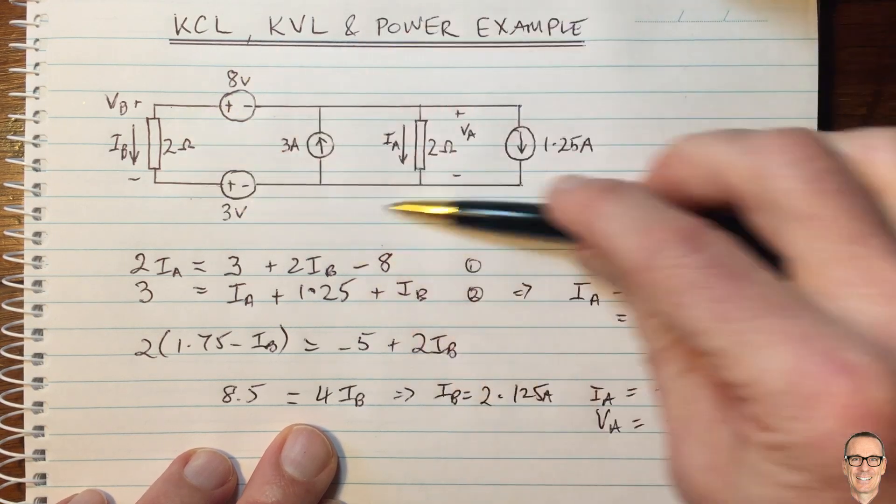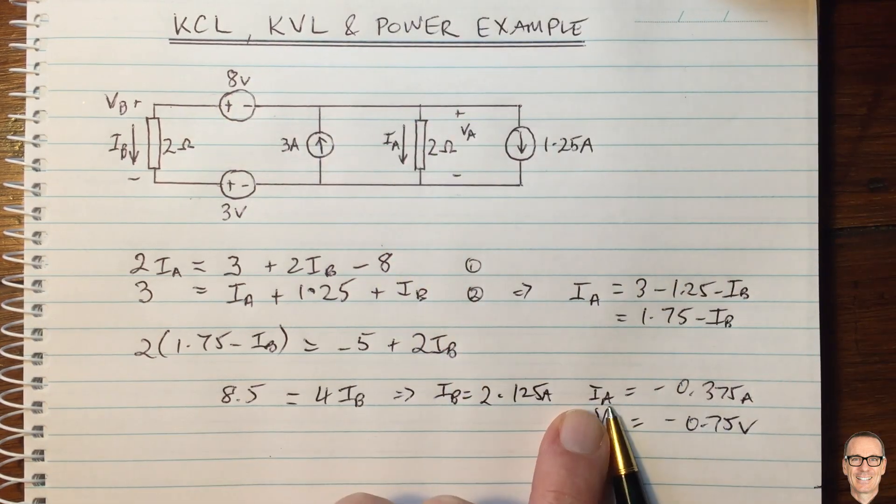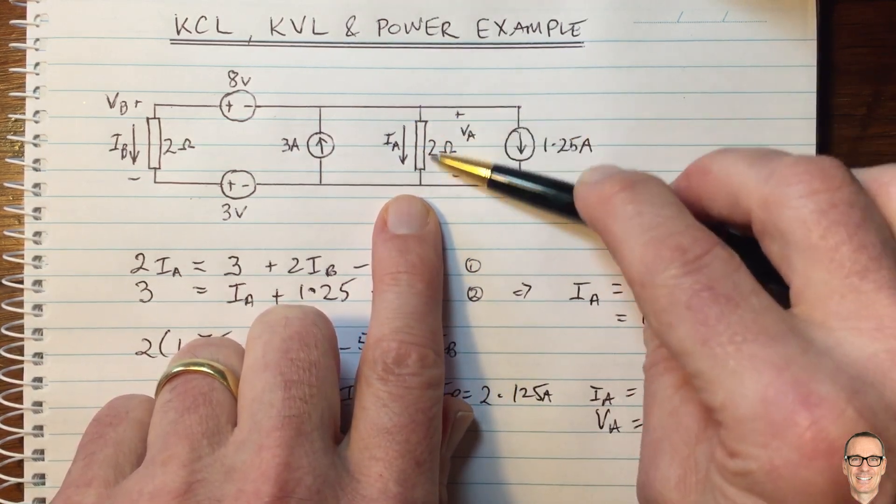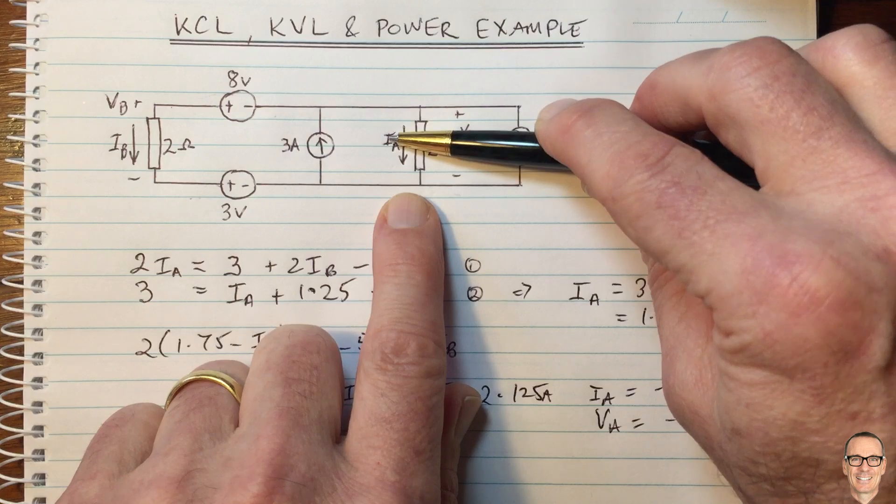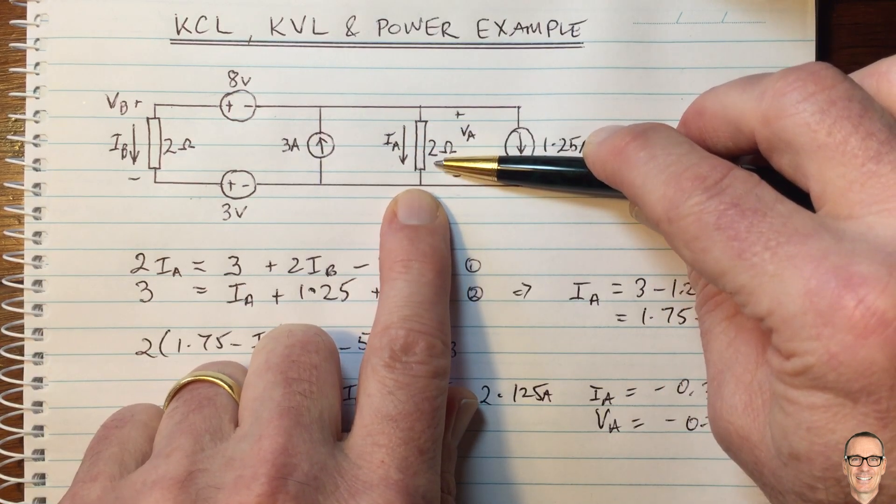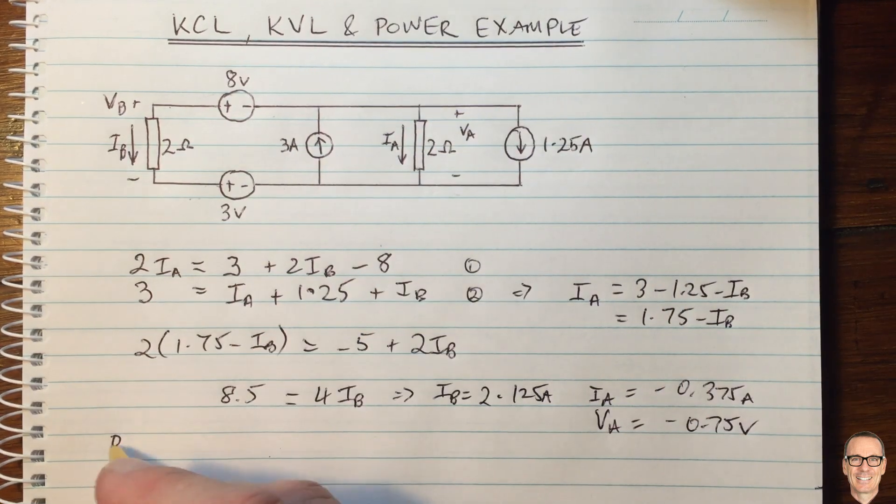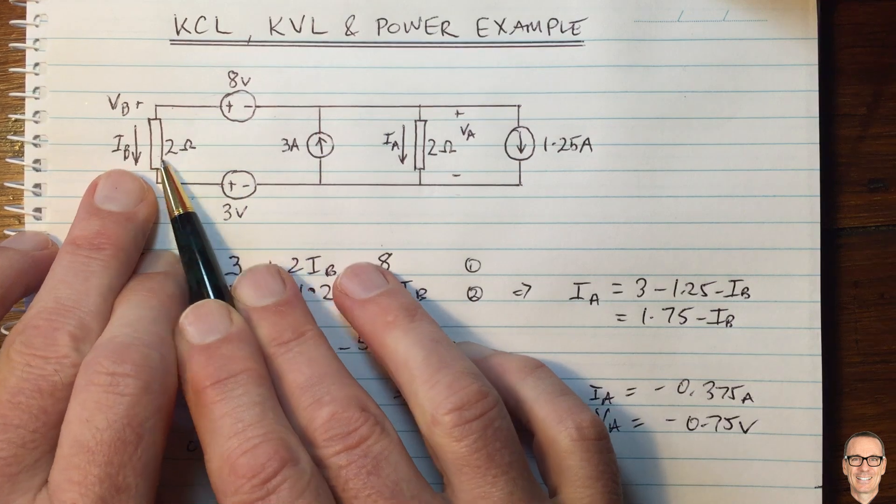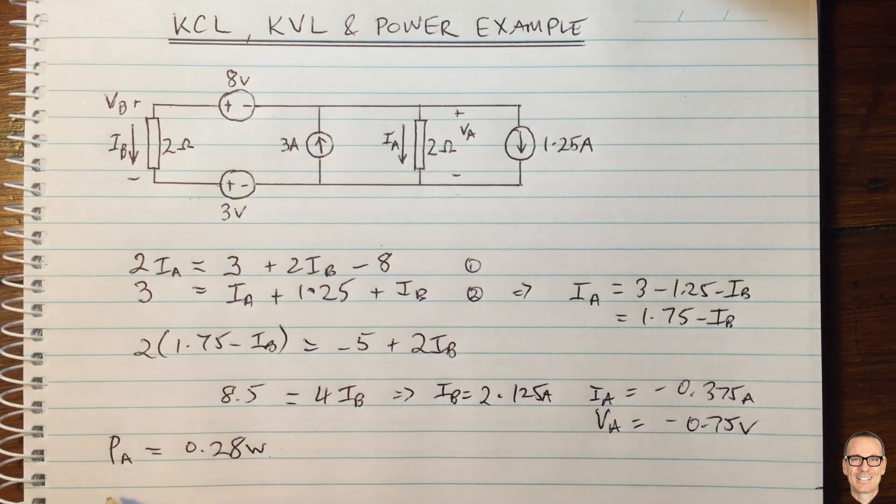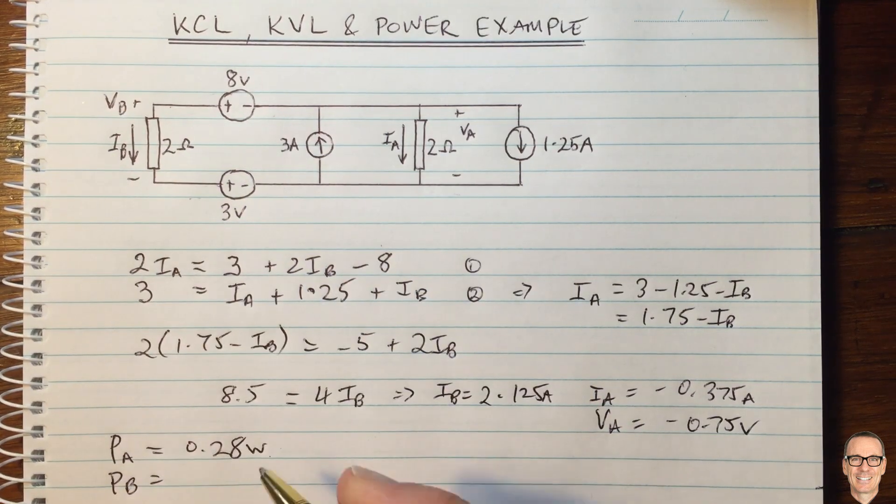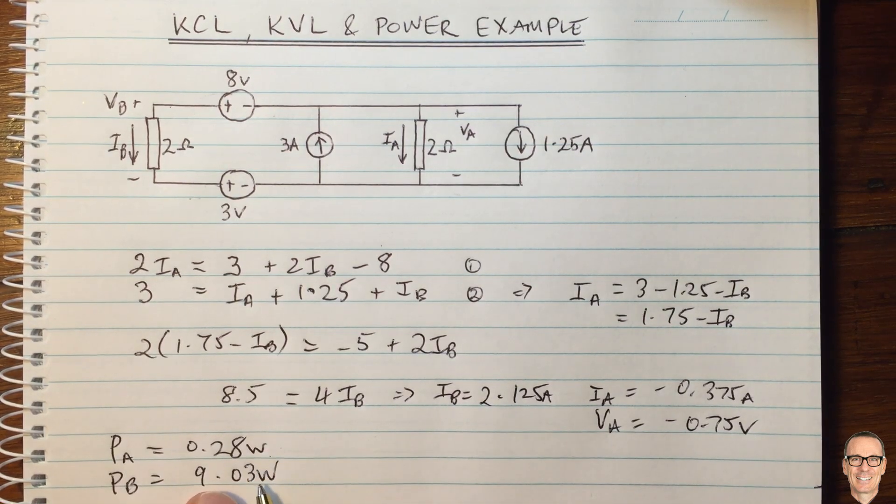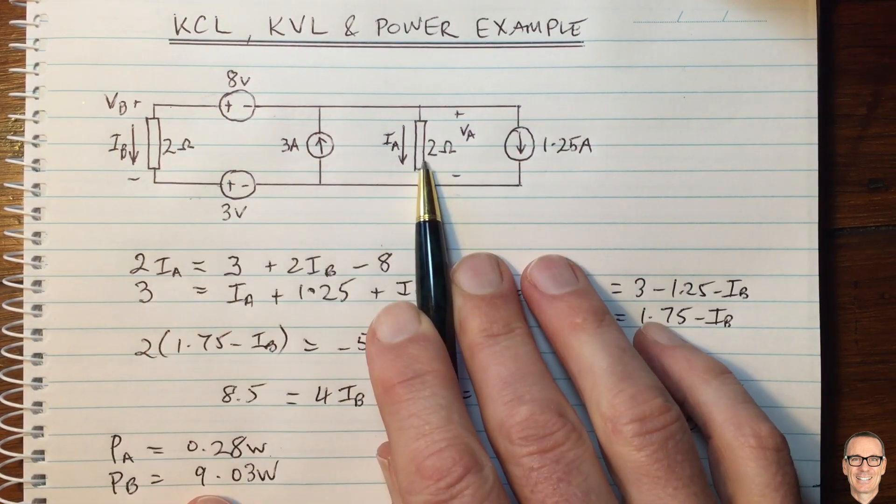But interestingly, we can also observe something about the powers. Let's have a look at the power in this resistor here. So this power here is going to equal IA squared times the resistance. And that equals, so the power through the resistor A equals 0.28 watts. Now, also the power through this resistor here, we call that PB, and that equals 9.03 watts. But this is power that's consumed because they are in resistors.